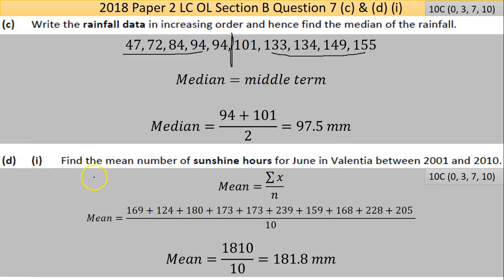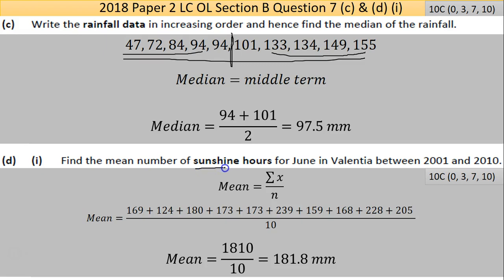Part D, part one: find the mean number of sunshine hours for June in Valencia between 2001 and 2010. I made a mistake earlier and used the rainfall data instead of the sunshine data. The sunshine hours are in the bottom row. Add them all together and divide by the number of data points. Adding them I got 1810, divided by 10, giving a mean of 181.8 hours.